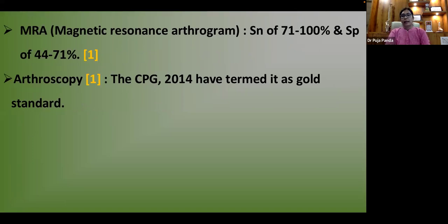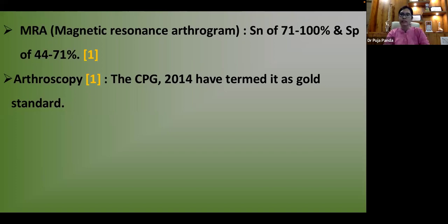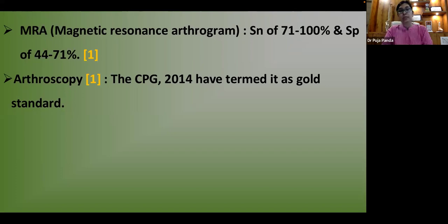For imaging: MRA (magnetic resonance arthrogram) is considered the gold standard imaging modality per CPG APTA, with sensitivity of 71–100% and specificity of 44–71%. Standard MRI can miss labral tears. Arthroscopy is the overall gold standard for diagnosis.